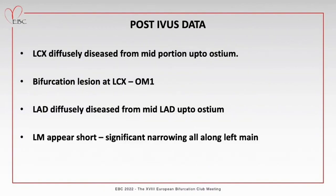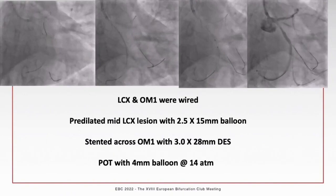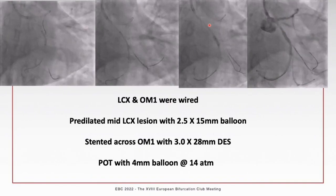IVUS revealed diffusely diseased vessels from the left main ostium into the daughter branches - in the circumflex extending beyond the obtuse marginal origin, and in the LAD extending beyond the diagonal origin. The left main was short with significant narrowing throughout. The strategy was stepwise provisional side branch stenting of the circumflex/obtuse marginal bifurcation and the LAD/diagonal bifurcation, with an upfront two-stent strategy planned for the left main bifurcation extending the stent to the left main ostium.